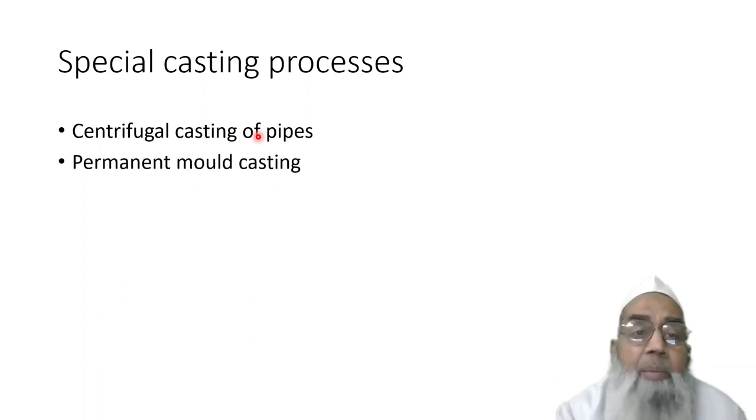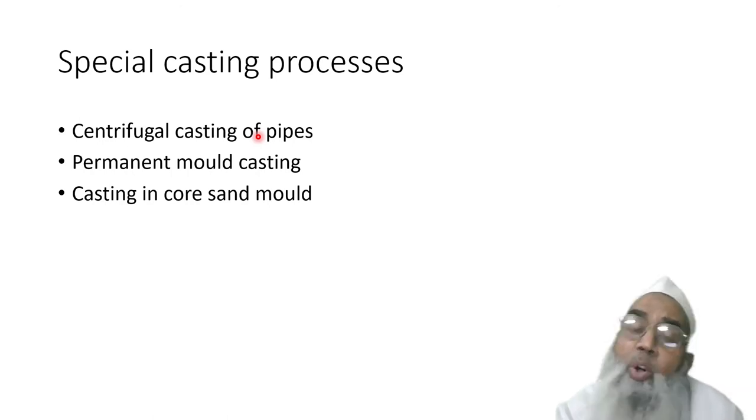There are certain special casting processes. When casting a pipe, permanent mold casting can also be used for particular special purposes. Casting in core sand mold can also be given, and shell molding can also be adopted to have a sound casting.